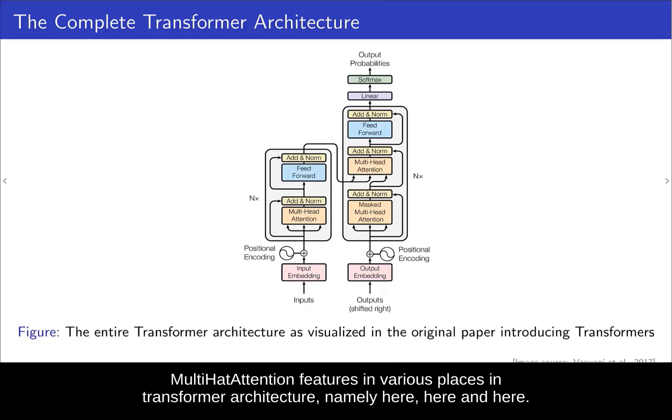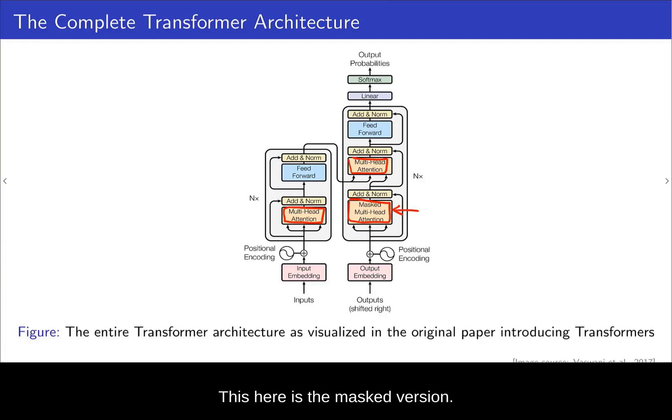Now multi-head attention features in various places in the transformer architecture, namely here, here and here. And this here is the masked version. And also note that some of these are self-attention. Namely, this first one here is self-attention. So these inputs here are being used as keys and queries and values. The same one here.